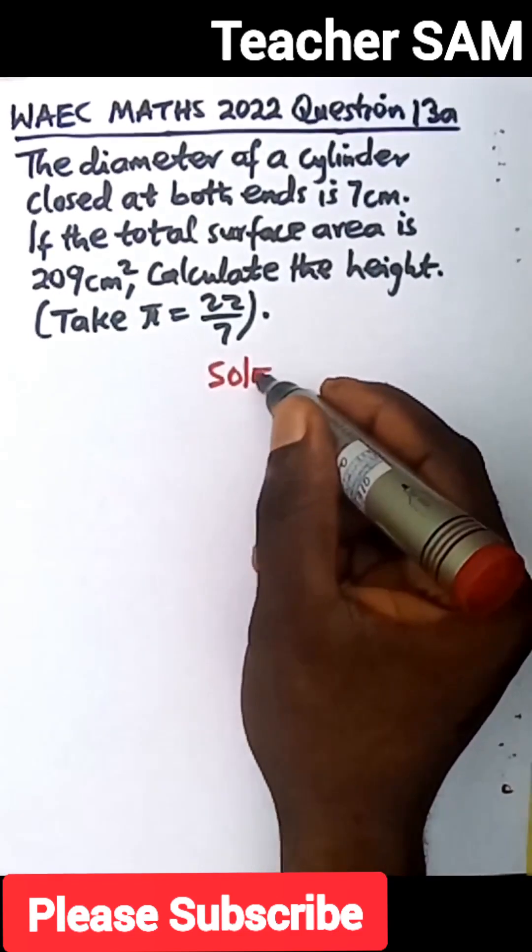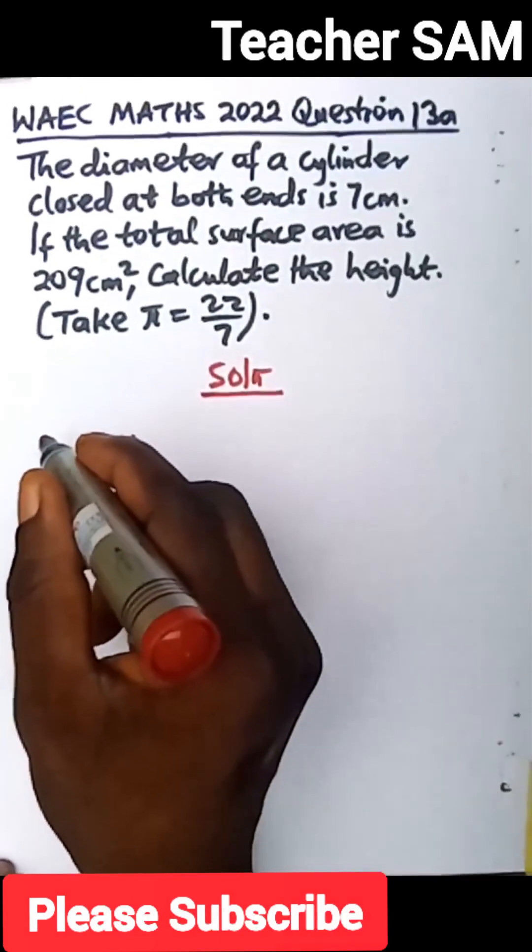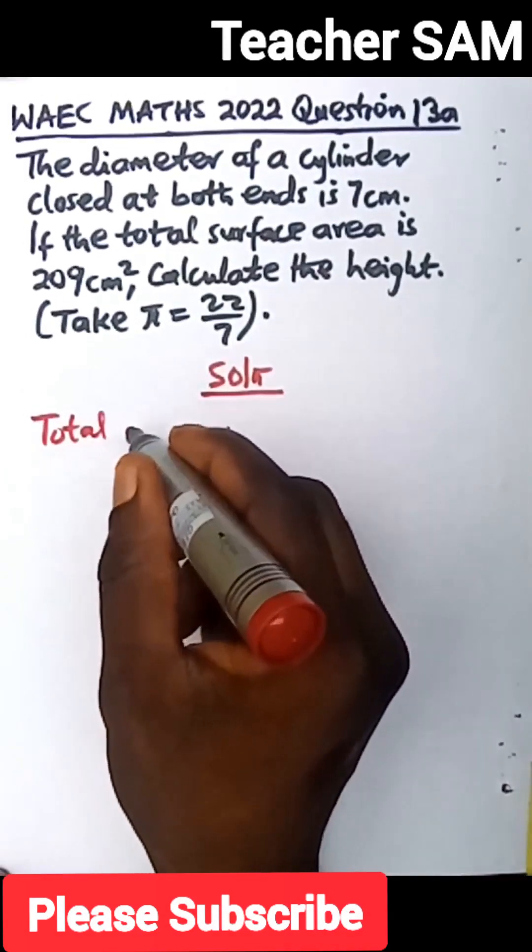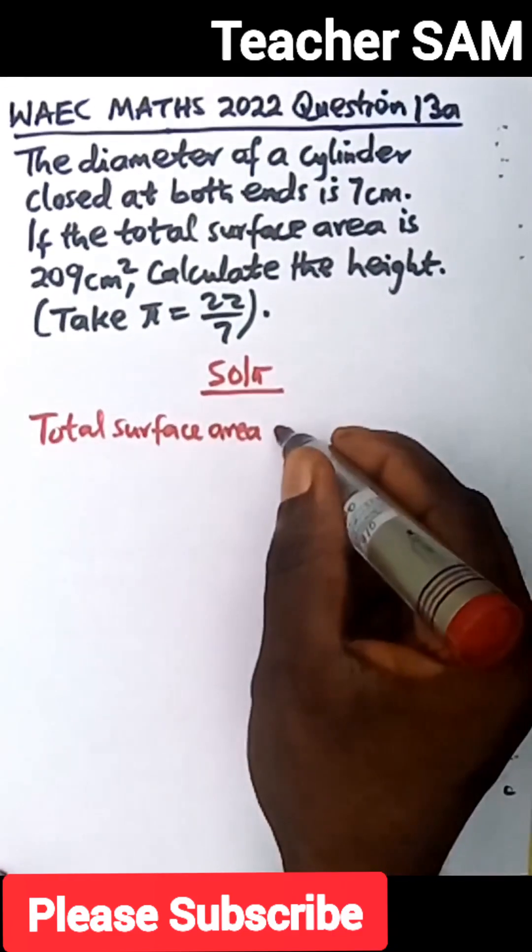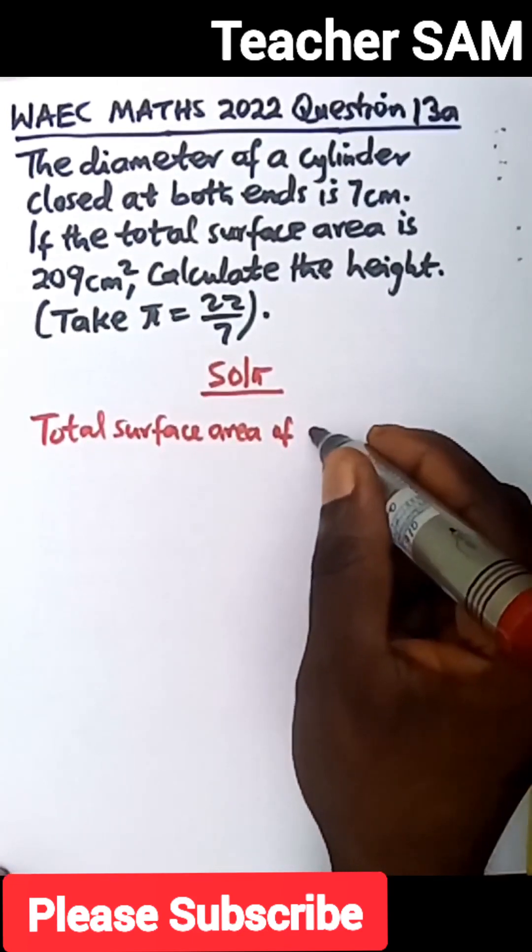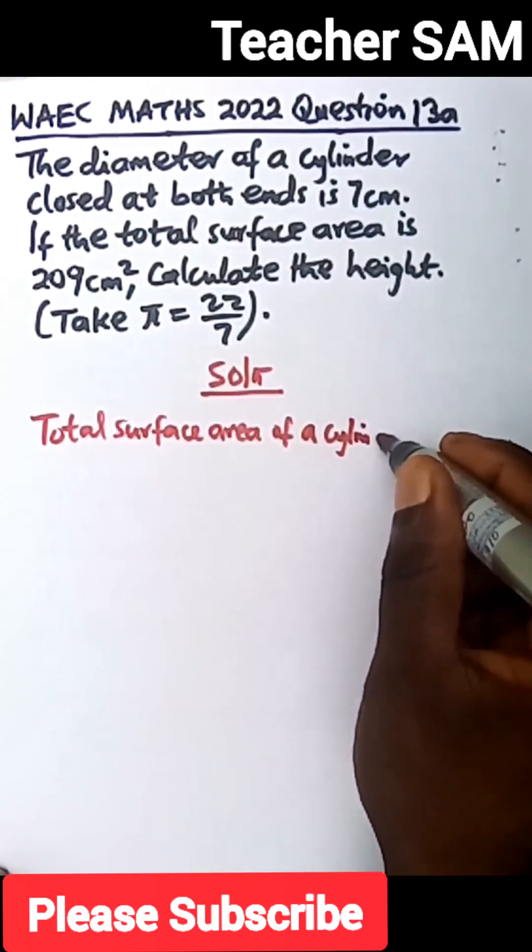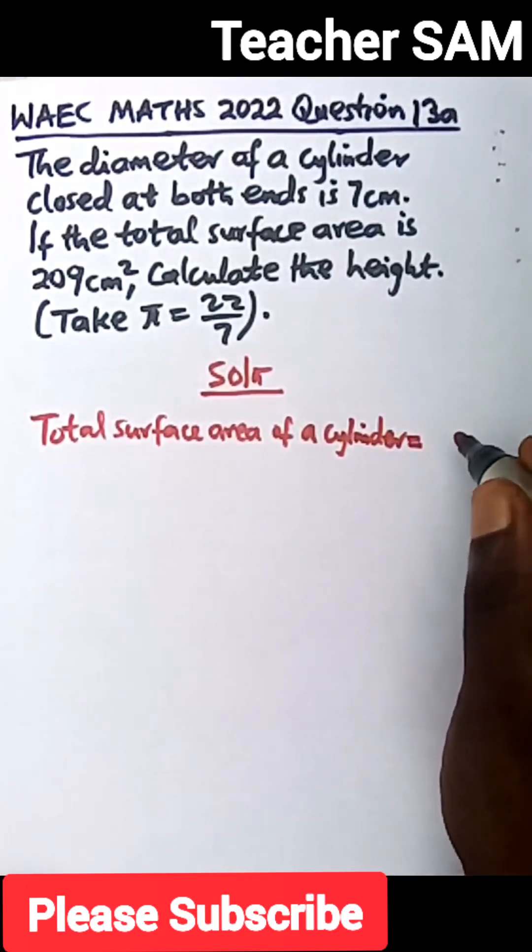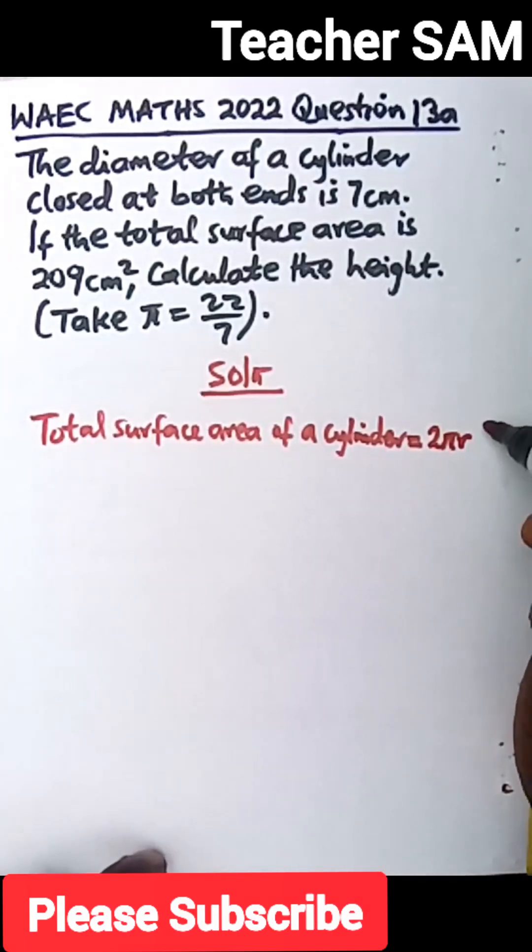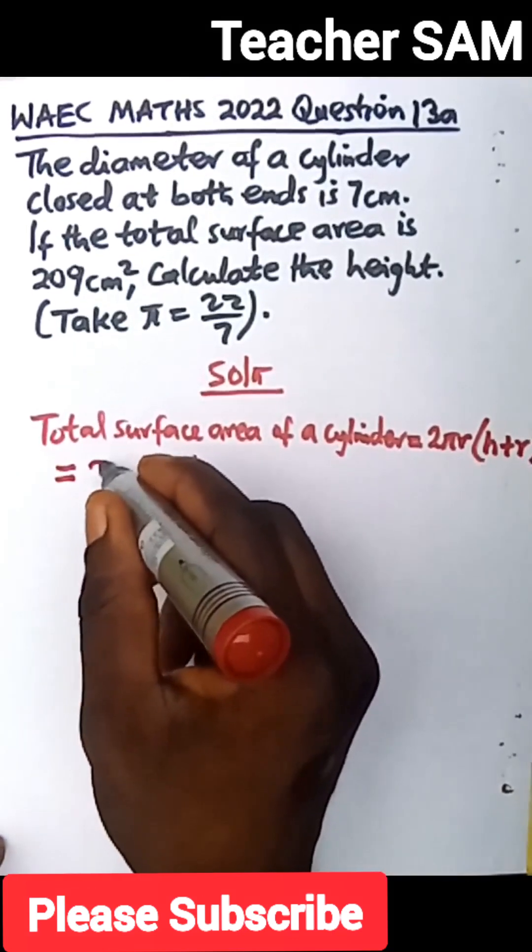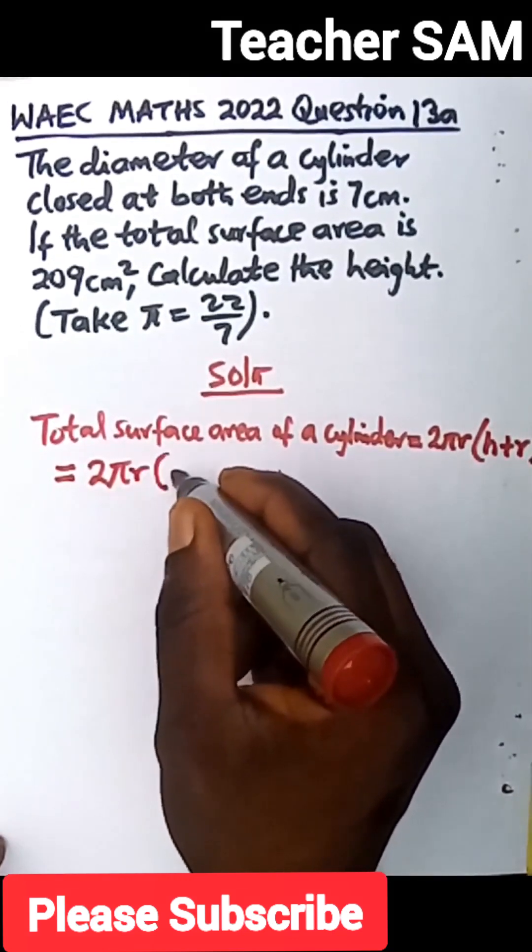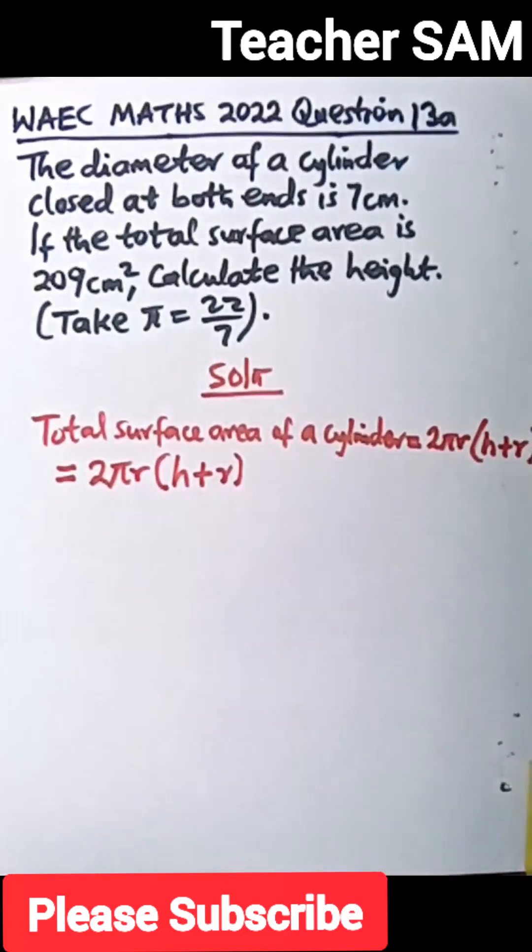Solution. The total surface area of a cylinder is equal to 2πr into h plus r. Let me rewrite that. 2πr into h plus r. So that is the total surface area of a cylinder.